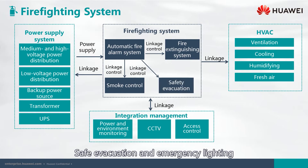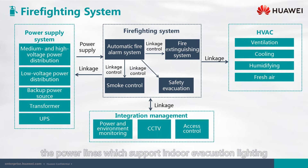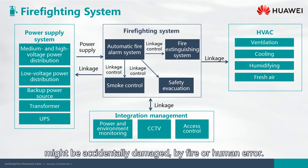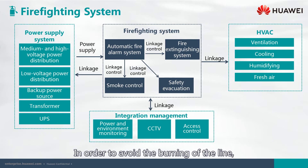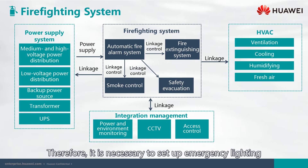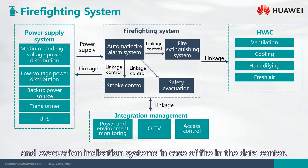Safe evacuation and emergency lighting. In the data center, the power lines which support indoor evacuation lighting might be accidentally damaged by fire or human error. In order to avoid the burning of the line, some power lines must be cut off artificially. Therefore, it is necessary to set up emergency lighting and evacuation indication systems in case of a fire in the data center.